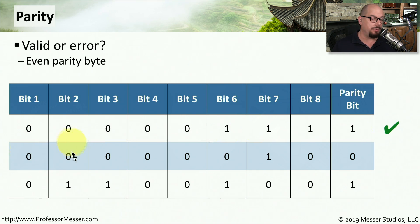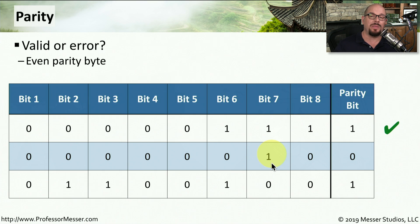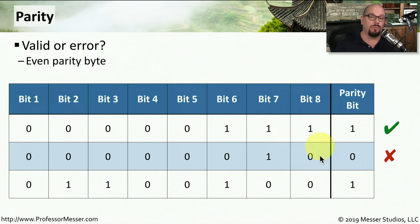Looking at the next byte: 0, 0, 0, 0, 0, 0, 1, 0 with a parity bit of 0. Counting the ones, we get an odd number, which means something went wrong and that particular byte was corrupted. Our parity memory would recognize that byte as invalid.